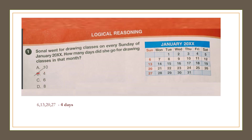First section is logical reasoning. Question number 1: Sonal went for drawing classes on every Sunday of January 20XX. How many days did she go for drawing classes in that month? She is going to the classes every Sunday. There are 4 Sundays in January, so she went 4 days. Our answer is option B, 4.